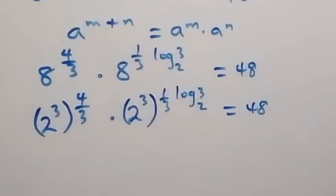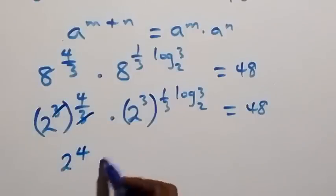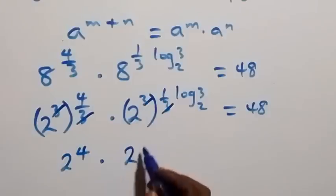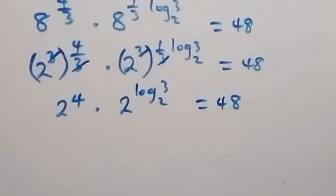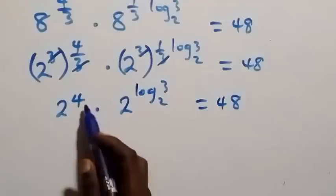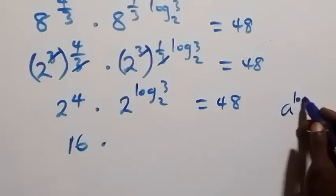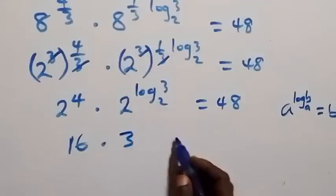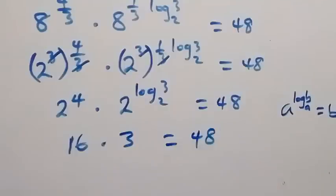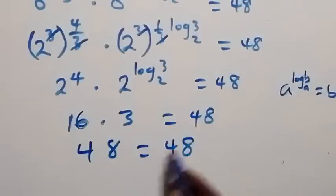This equals 2 raised to power 4 over 3, times 2 raised to power 1 over 3 log 3 base 2, equals 48. Applying the law of indices, the 3 cancels out, giving 2 raised to power 4 times 2 raised to power log 3 base 2 equals 48. That is 16 times 3, since by the log law a raised to power log b base a equals b. So 16 times 3 equals 48, confirming left hand side equals right hand side.